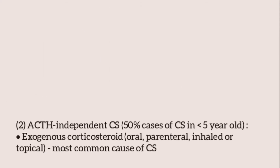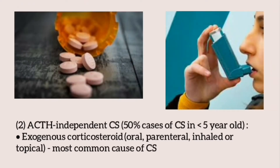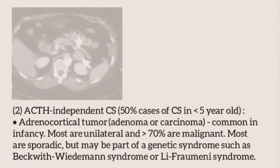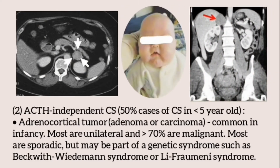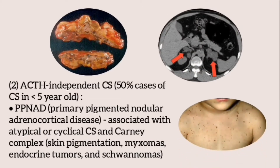The second category is ACTH-independent Cushing syndrome. Exogenous corticosteroid administration is the most common cause of Cushing syndrome in children. Another important cause is adrenocortical tumors, which may be adenoma or carcinoma. These are common in infancy, most are unilateral, and more than 70% are malignant. Most are sporadic but may be part of a genetic syndrome such as Beckwith-Wiedemann syndrome or Li-Fraumeni syndrome.